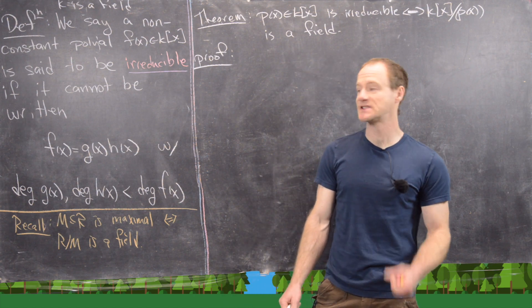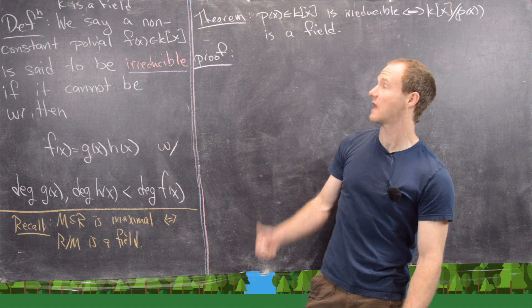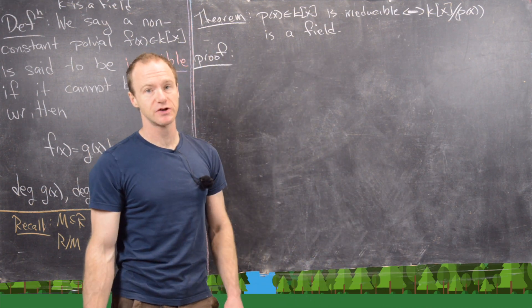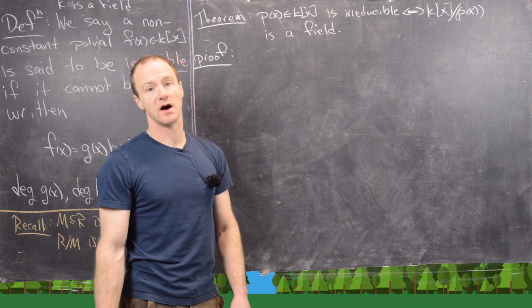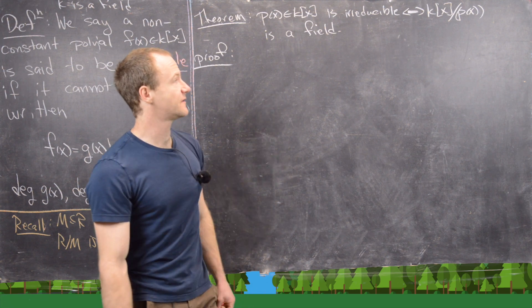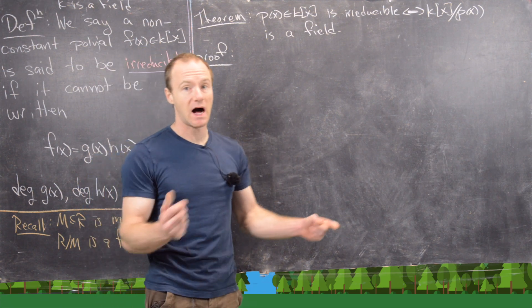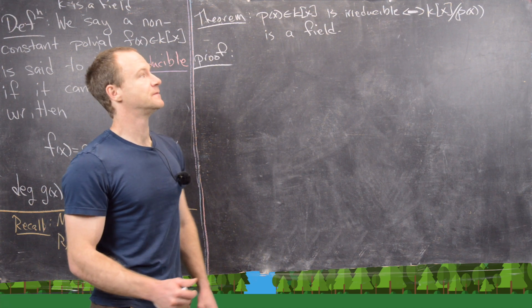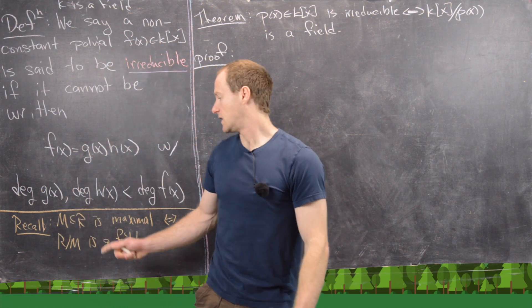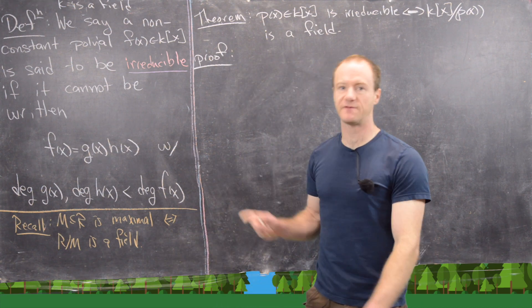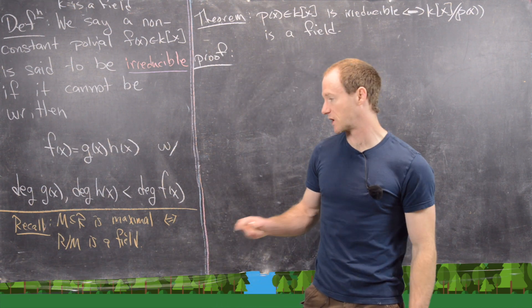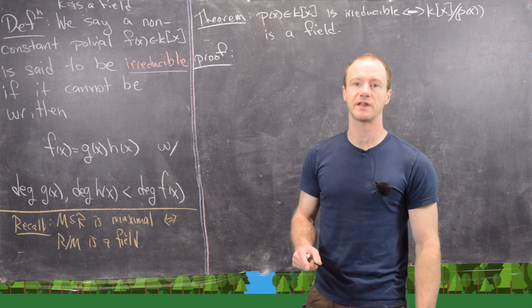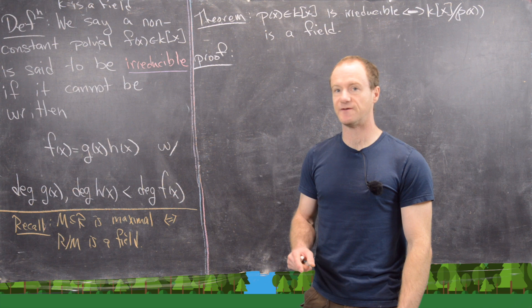Now that we've looked at the definition and some examples, I want to do a really classic result which says that we have an irreducible polynomial over a field if and only if k[x] mod the principal ideal generated by p(x) is a field. I want to recall the following fact, which I have another video for: an ideal m is maximal if and only if R mod m is a field.